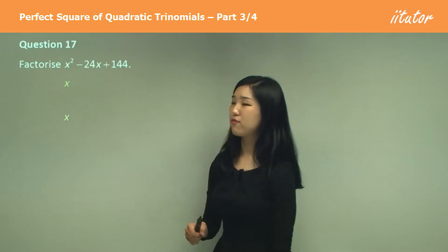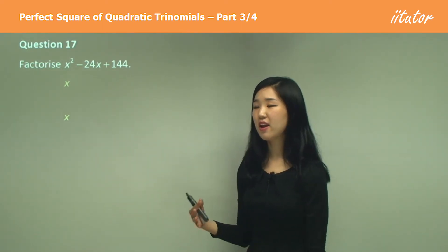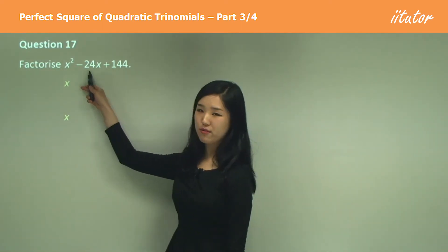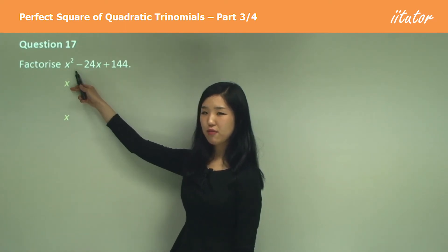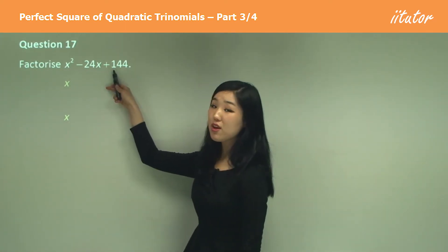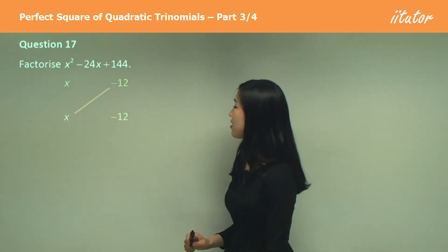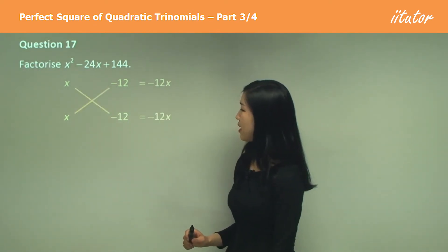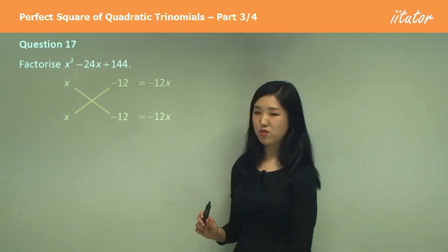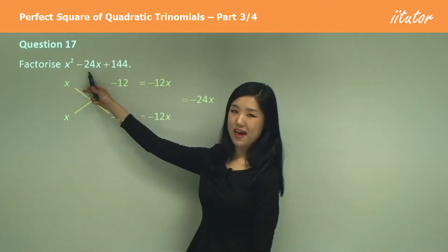I know that 144 is 12 times 12, and I know that 12 plus 12 is 24. But look, it's got negative. So because it's a positive, I need to put negative 12 and negative 12 here. So cross multiply, cross multiply. Negative 12 minus 12 is negative 24, which is the same as that.